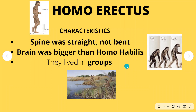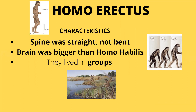Let's look at the characteristics of Homo Erectus. His spine was straight, not bent. His brain was bigger than that of Homo Habilis, meaning he could think even better. You can see from the brain pictures how the brain grows larger as we move through the stages. Homo Erectus also used to live in groups, because being together provided protection from animal attacks and allowed them to help each other.